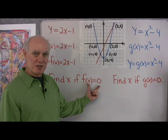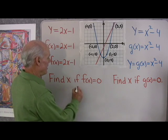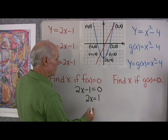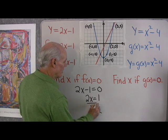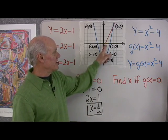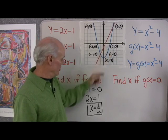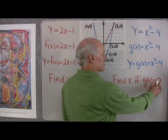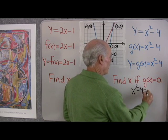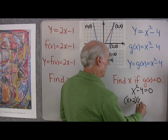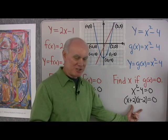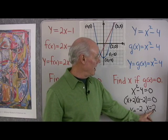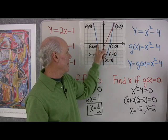Find x if f of x equals 0. Since f of x is 2x minus 1, that means 2x minus 1 equals 0. Add 1 to both sides: 2x equals 1, so x equals one half. When x is one half, f of x equals 0 — that's the point where the graph crosses the x-axis. If g of x equals 0, then x squared minus 4 equals 0, which factors as (x plus 2)(x minus 2) equals 0. So x equals negative 2 and x equals 2, which is where that graph crosses the x-axis.